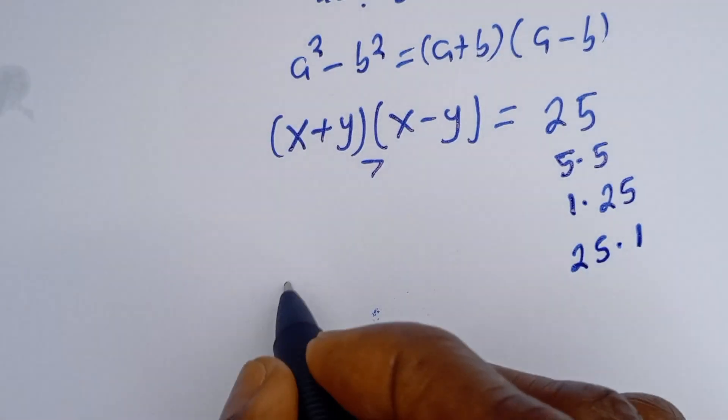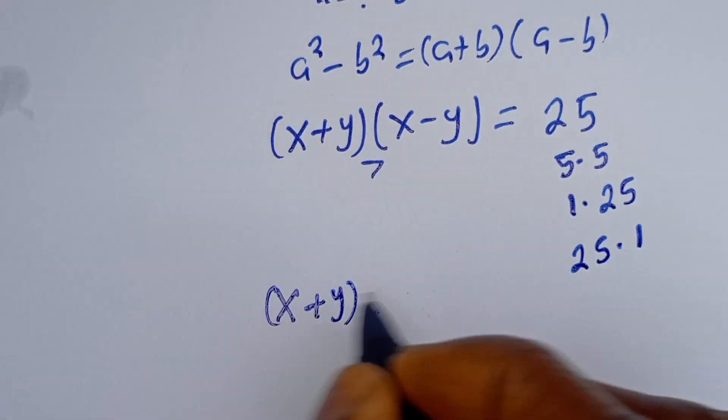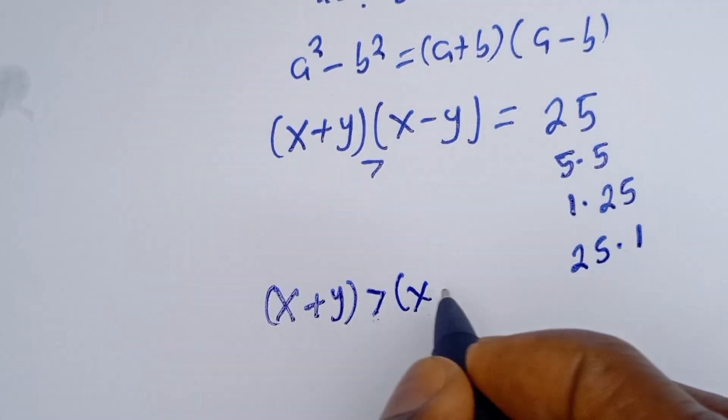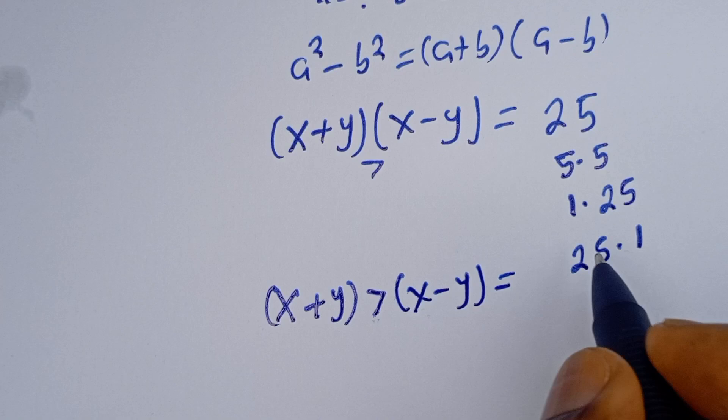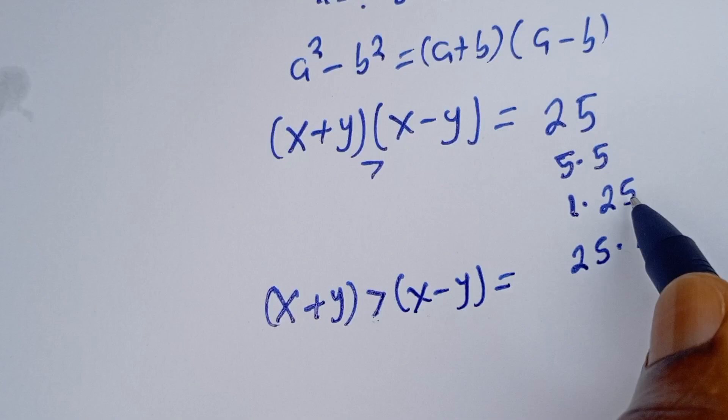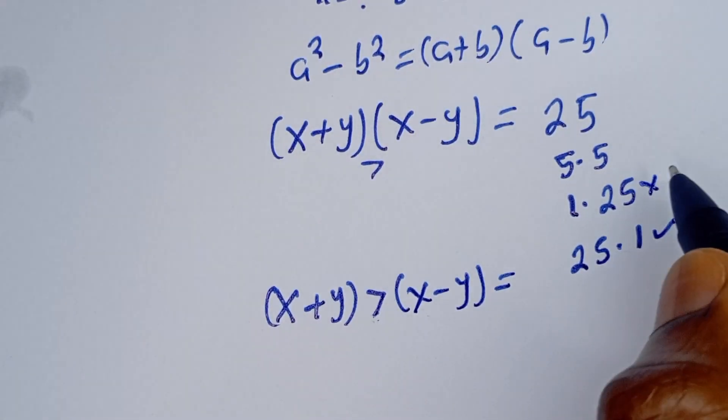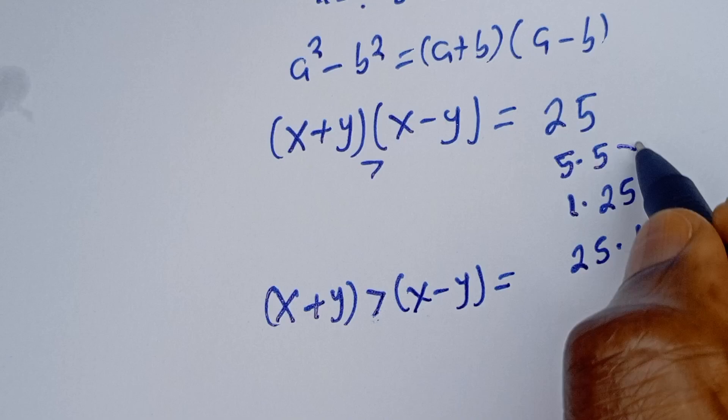Then from here we have X plus Y, which is greater than X minus Y. From the factors we have 5 times 5, but 5 is the same thing. 1 is less than 25, and 25 is greater than 1, so we consider this.